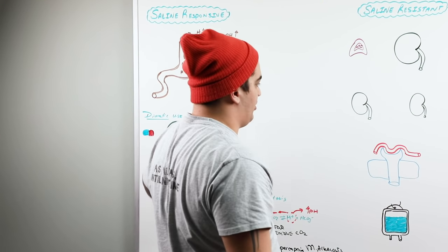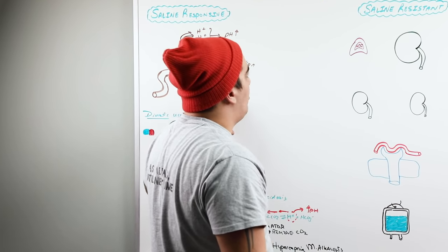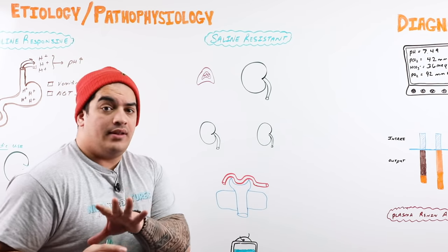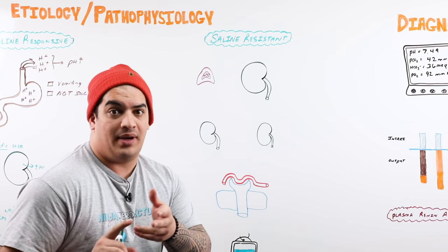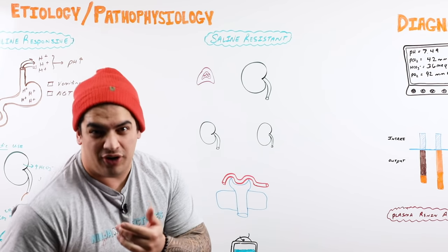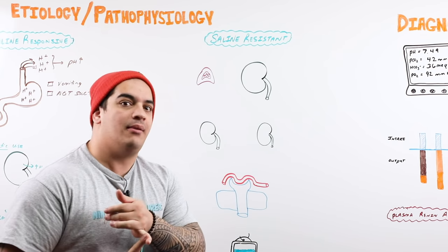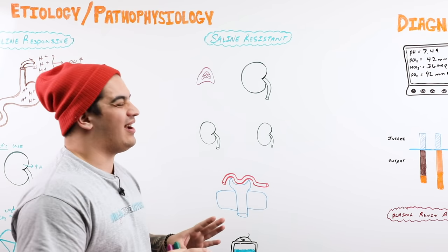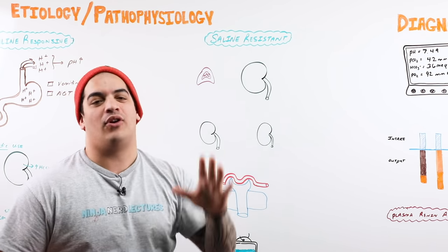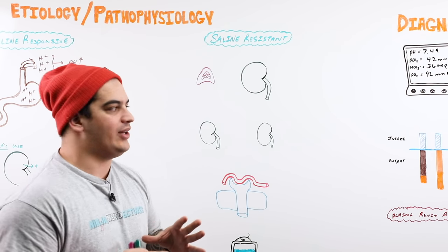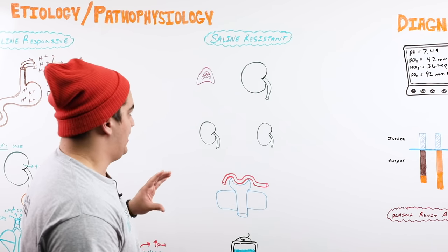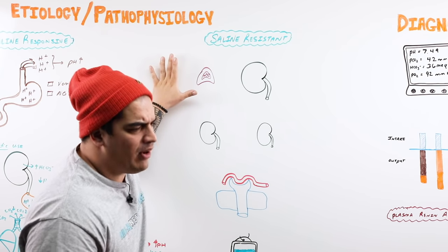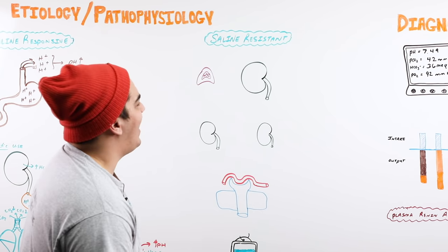Those were the saline-responsive etiologies — vomiting, NG tube suction, diuretic use, and post-hypercapnia metabolic alkalosis. These are by far the most common etiologies to remember. Now let's talk about the saline-resistant etiologies, which are less common.